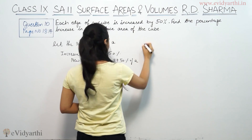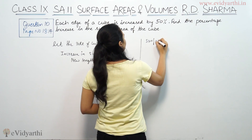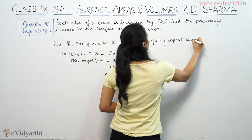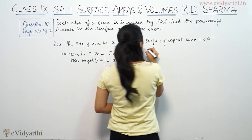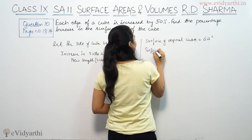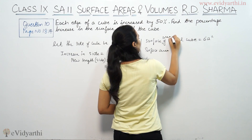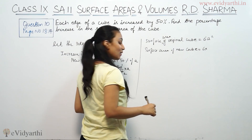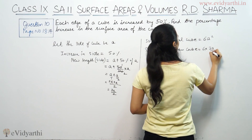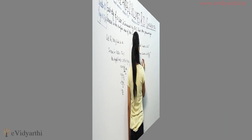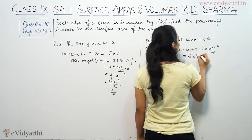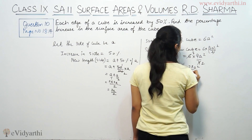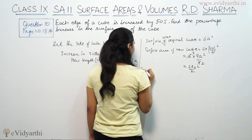Now let's look at our surface area. The surface area of the original cube is 6 times side squared, which is 6A². The surface area of the new cube will be 6 times (3A/2)², which equals 6 times 9A²/4, giving us 27A²/2.